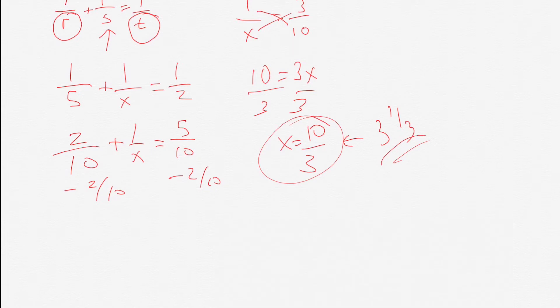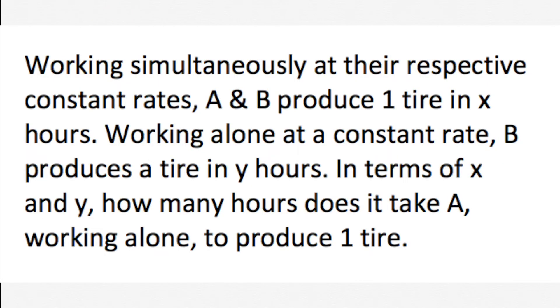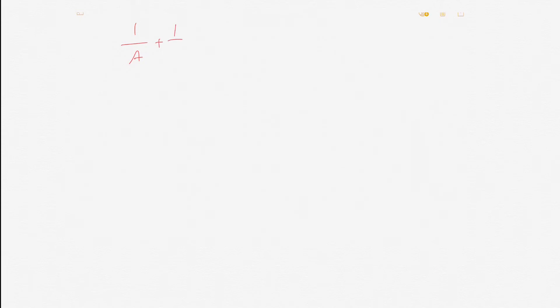Now, applying these formulas, let's do a complicated one. Working simultaneously at their respective constant rates, A and B produce one tire in X hours. Working alone at a constant rate, B produces a tire in Y hours. In terms of X and Y, how many hours does it take A working alone to produce one tire? Do not get intimidated. Same idea: one over A plus one over B equals one over T. It tells us how long it takes them to do it together, and that's X. So one over A plus one over B equals one over X. And it tells us how long it takes B to do it — that's Y hours — so we have one over A plus one over Y equals one over X.